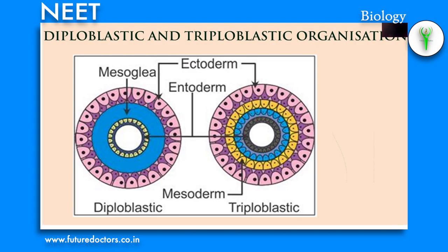Diploblastic and triploblastic organization: germ layers are groups of cells behaving as a unit during early stages of embryonic development. Diploblastic means animals in which the cells are arranged in two embryonic layers — an external ectoderm and an internal endoderm. In triploblastic animals, the developing embryo has a third germinal layer called mesoderm in between the ectoderm and the endoderm.